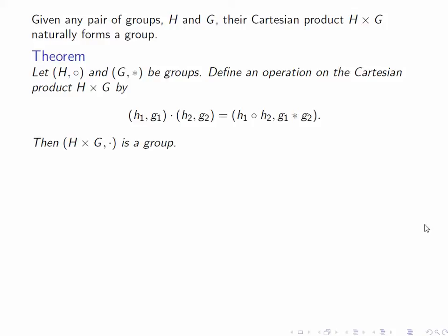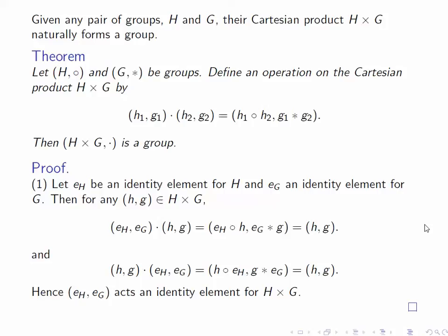Clearly it's a binary operation on H cross G, so we just need to check the three axioms. First, let's check the existence of an identity element. Because H and G are groups, they both contain identity elements which we'll denote E sub H and E sub G.